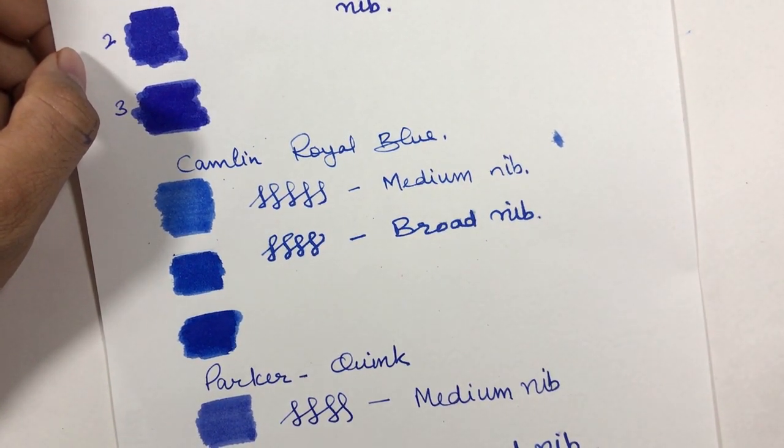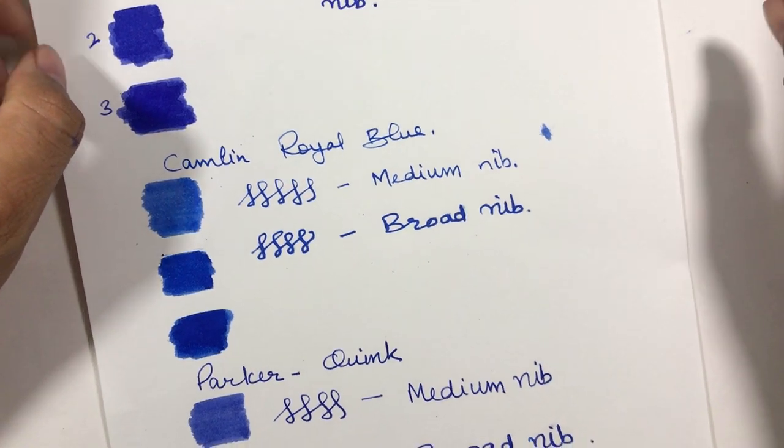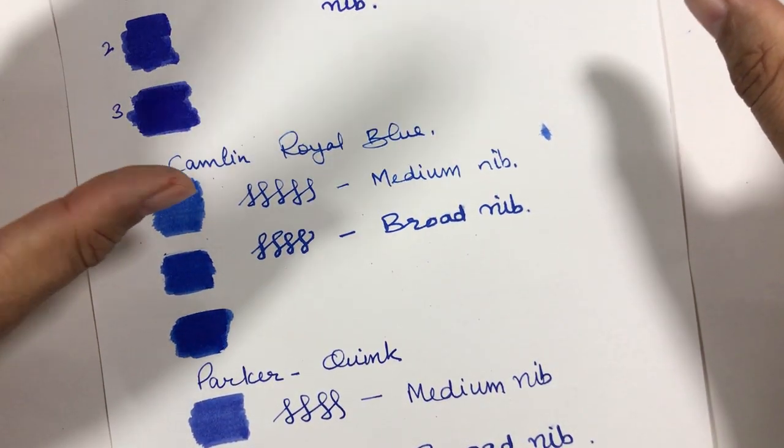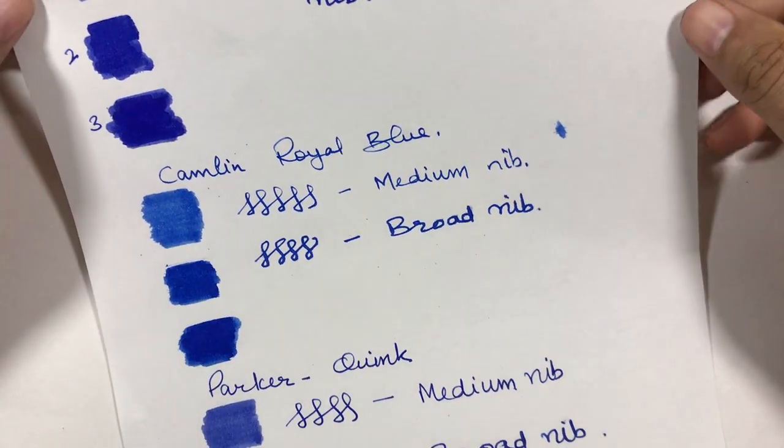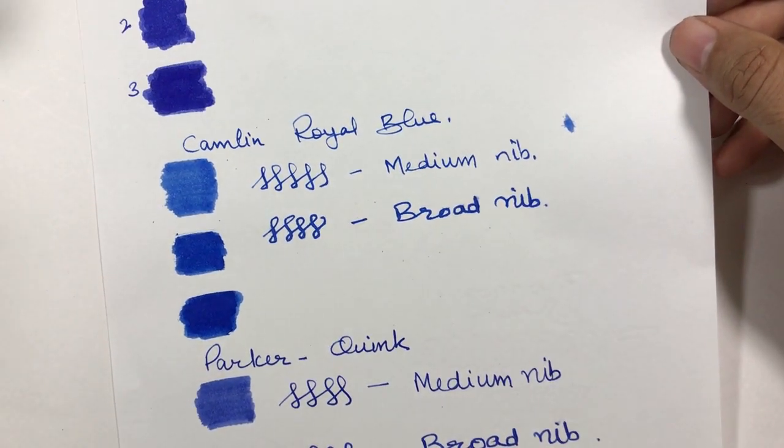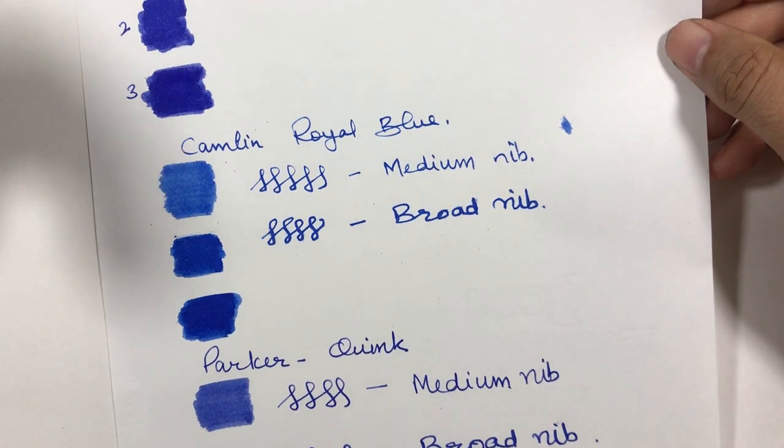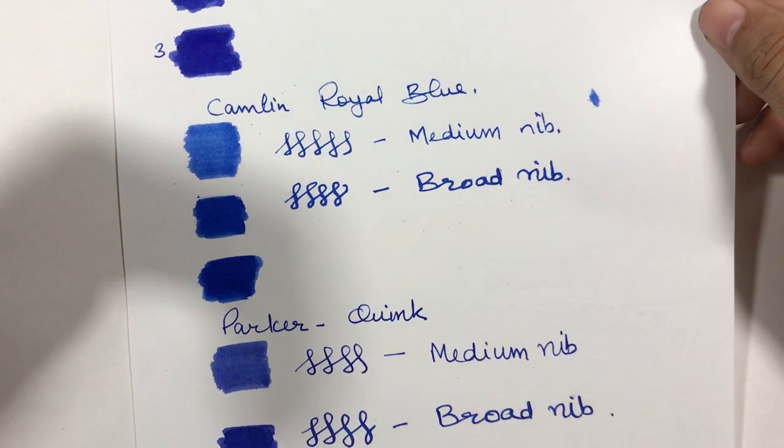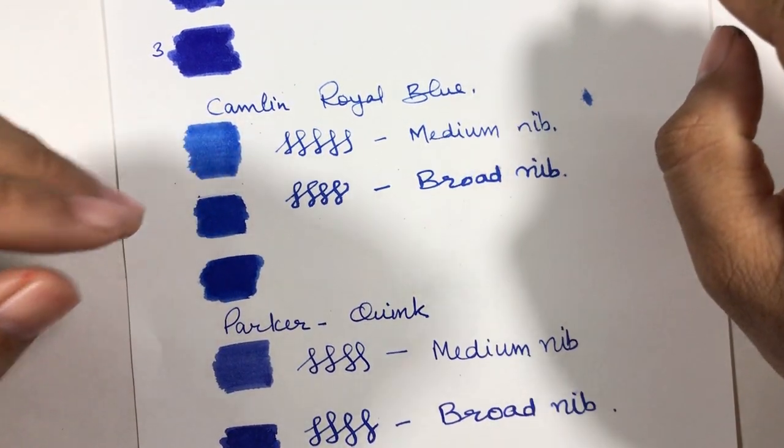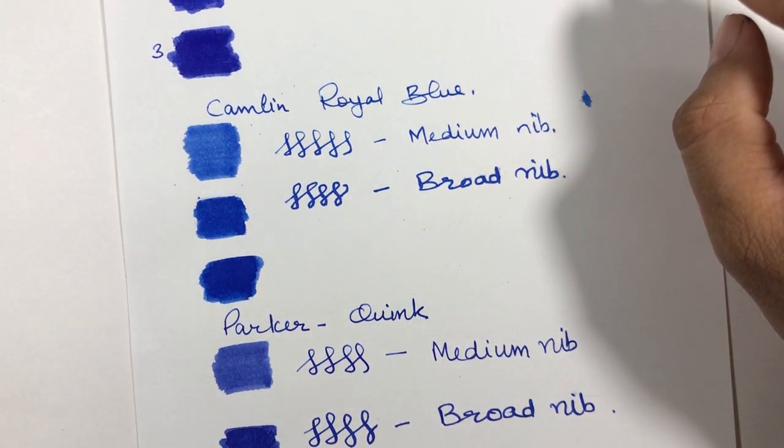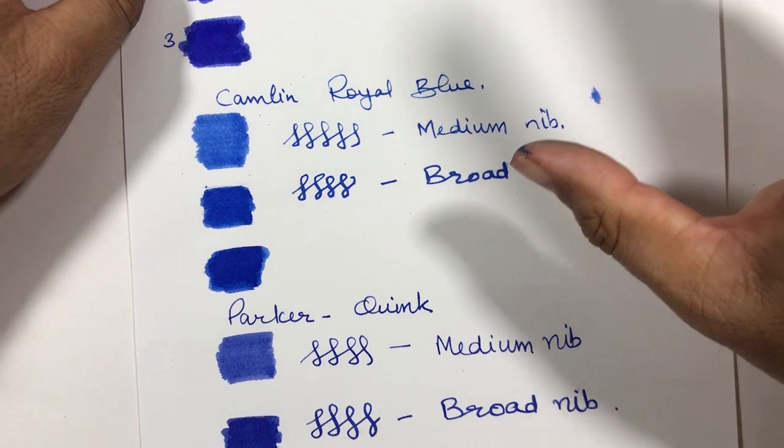But still it is a good ink. If you want variation of color, if you want more towards indigo type or purplish ink, then Daytone is a good ink. Otherwise, if you need some kind of turquoise type, then Camlin is good. But they won't write well on cheap papers.